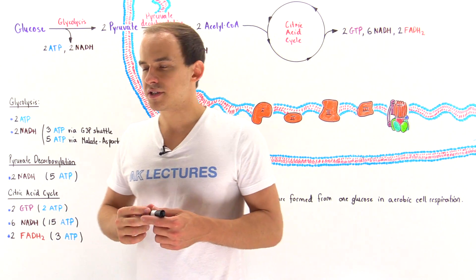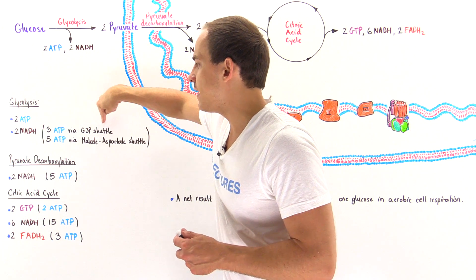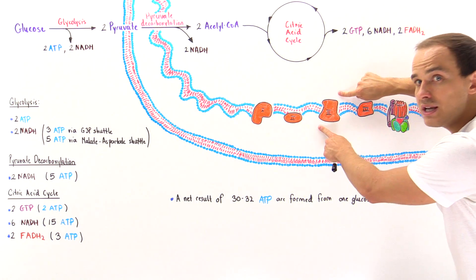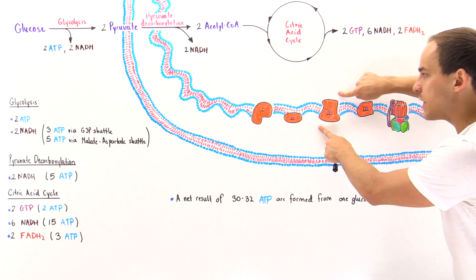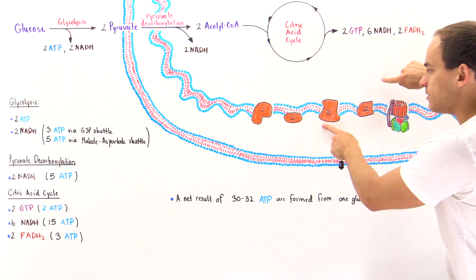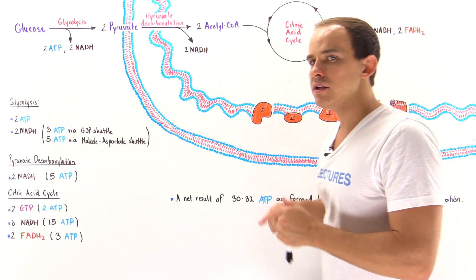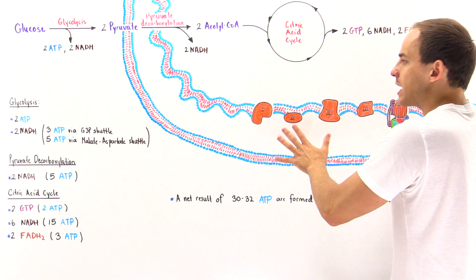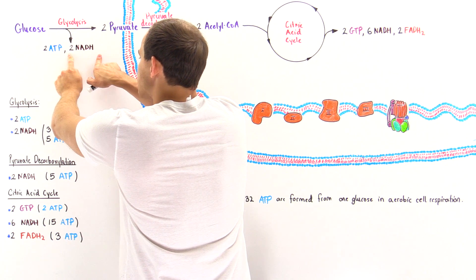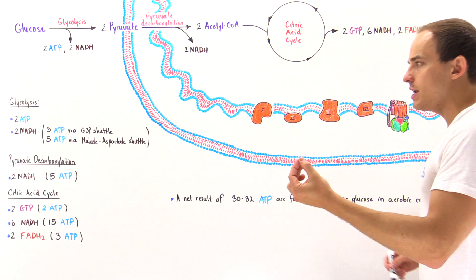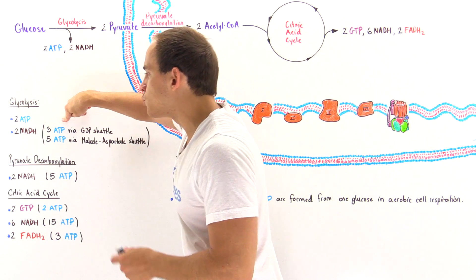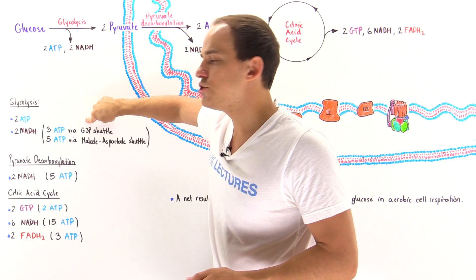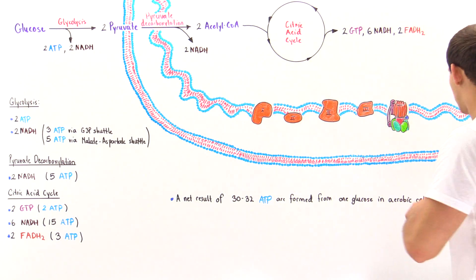Some cells, such as skeletal muscle cells, use a shuttle known as the glycerol 3-phosphate shuttle. In this case, the high-energy electrons are transported onto complex 3 of the electron transport chain, bypassing complex 1. As a result, 1.5 ATP molecules are formed when a single NADH produced in glycolysis moves onto the electron transport chain. Because we form 2 NADH molecules, 2 × 1.5 = 3 ATP molecules are formed per 2 NADH from glycolysis using the G3P shuttle.